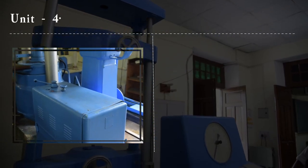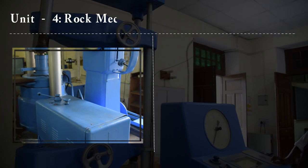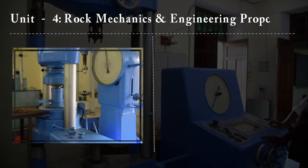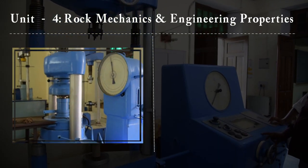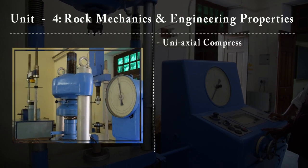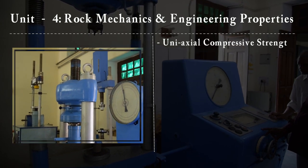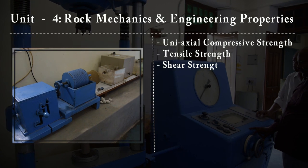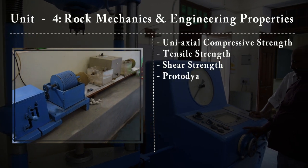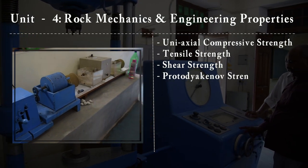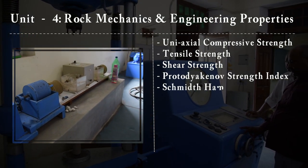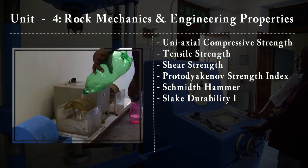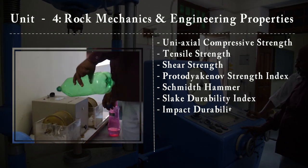Unit 4 will cover rocks, rock mechanics and engineering properties like uniaxial compressive strength, tensile strength, shear strength, protodiochino strength index, smith hammer, slick durability index, and impact durability index.